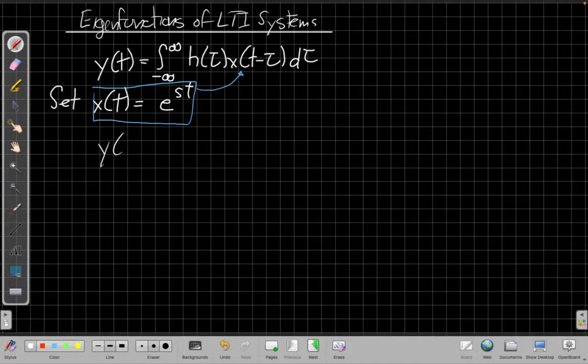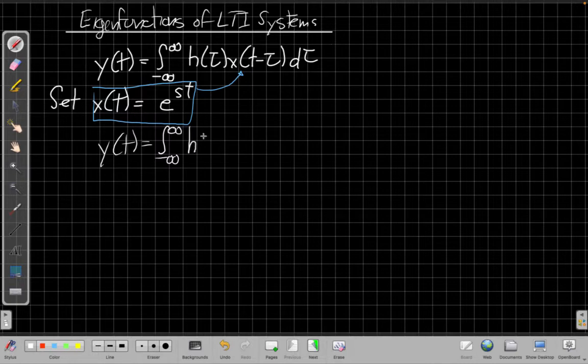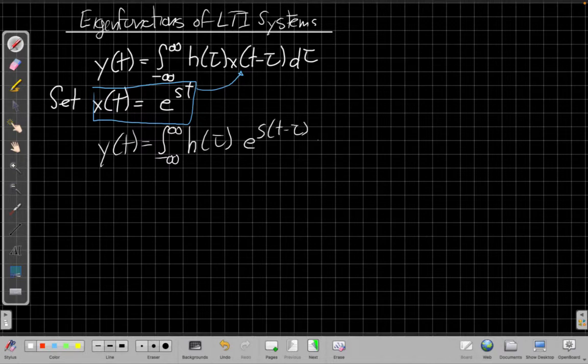The integral becomes y(t) is equal to the integral from minus infinity to plus infinity of h(tau) e to the s(t minus tau) d tau.